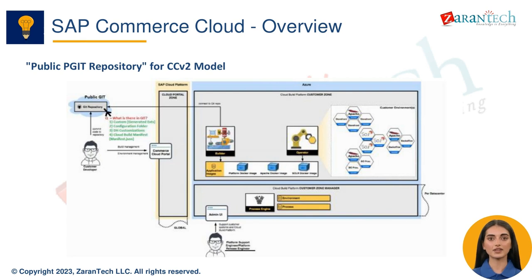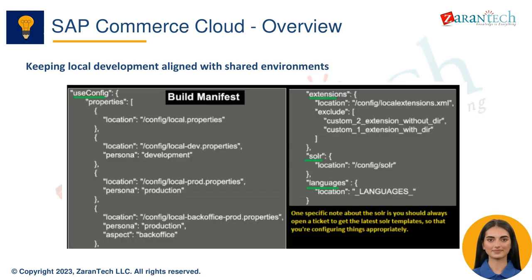SAP Commerce Cloud utilizes a public Git repository model for application code. Local development targets the public repo, which triggers automated builds and deployments to shared environments. This public repository approach ensures changes are efficiently propagated across the entire organization in real time.